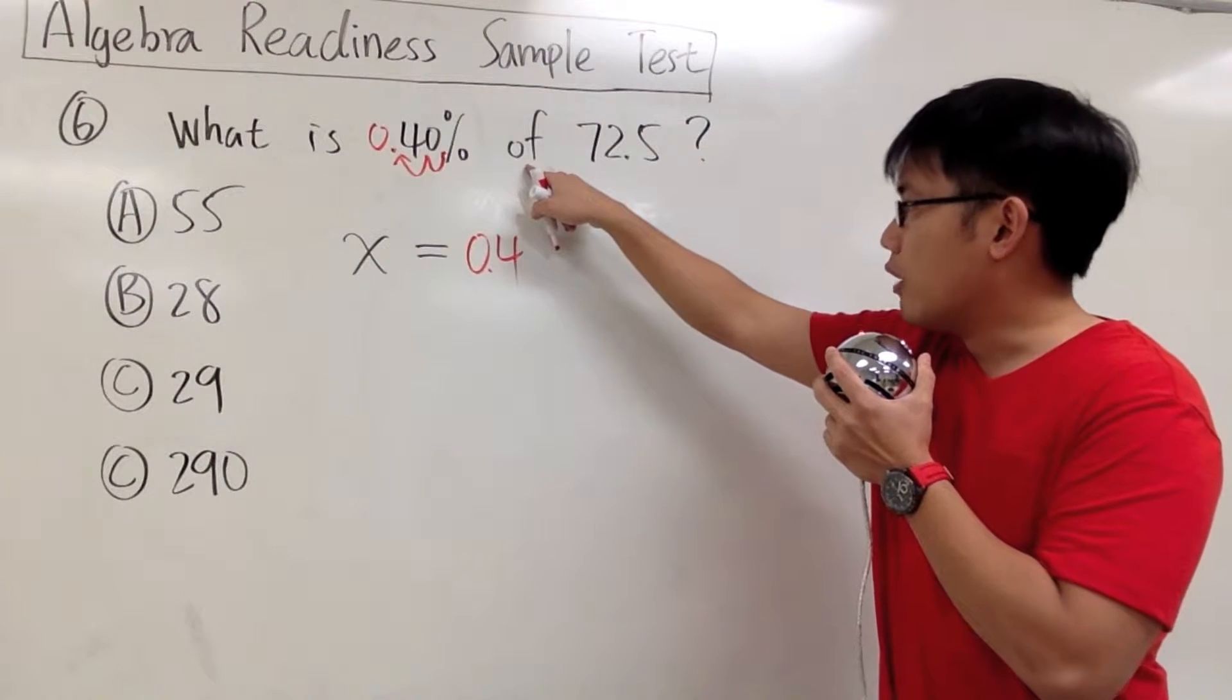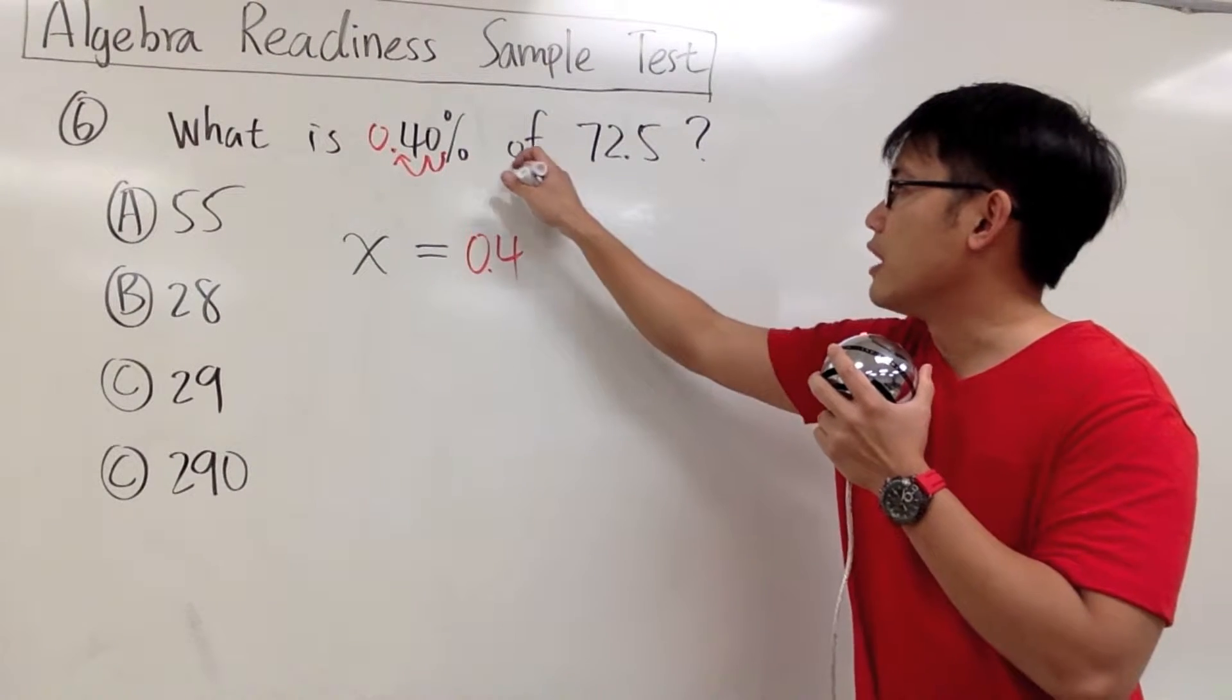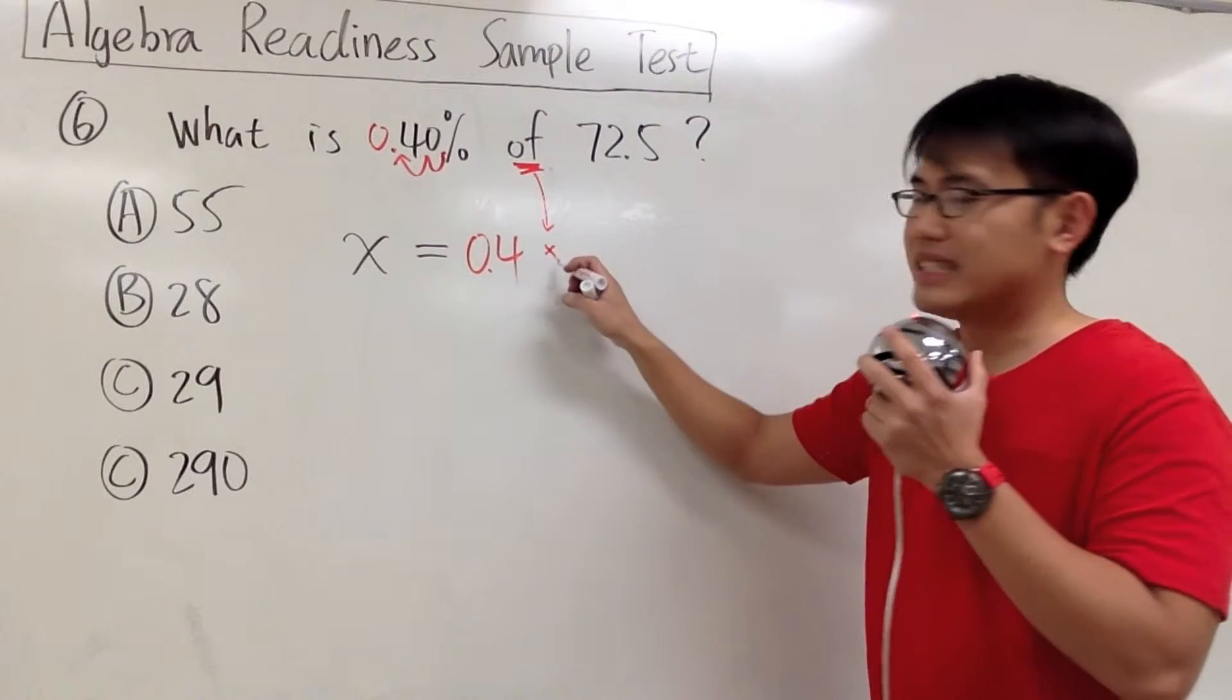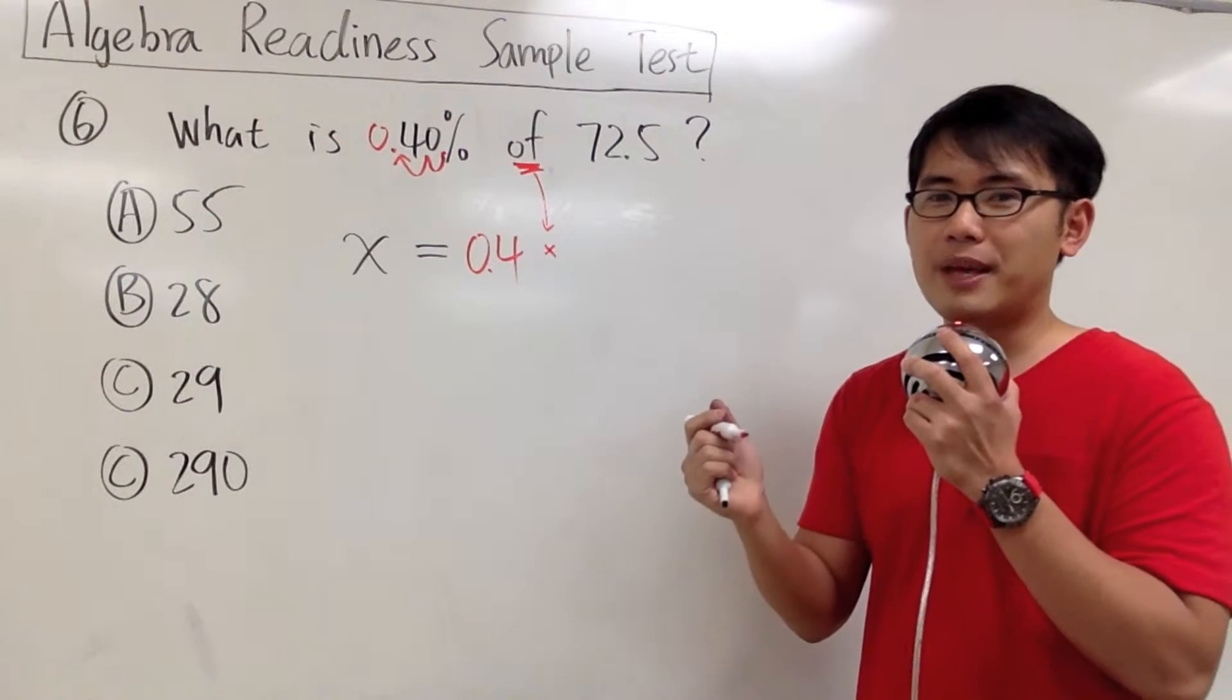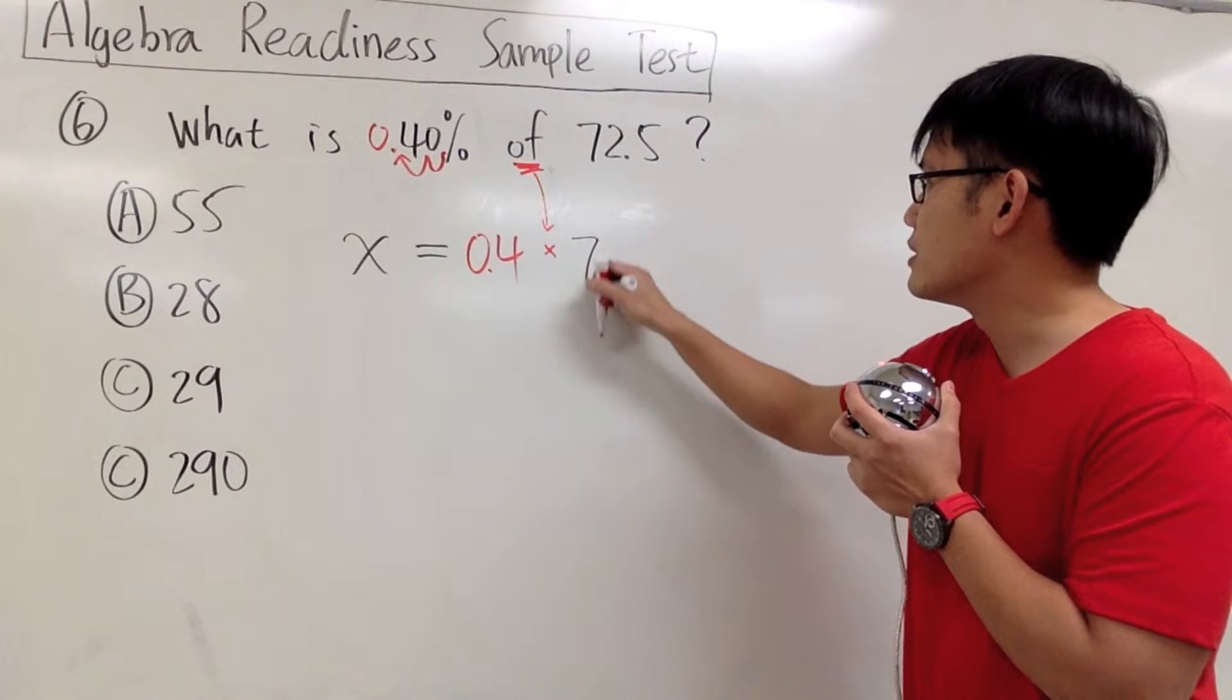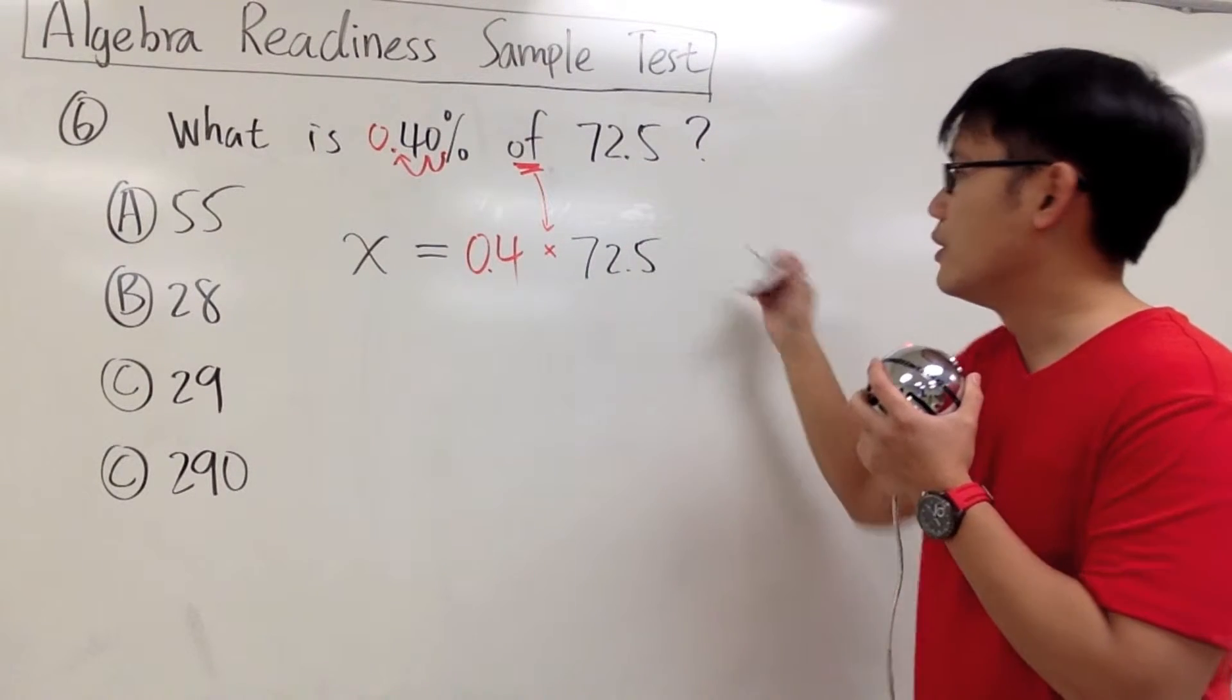And then the word 'of' - whenever you see the word 'of' by itself, this means multiplication. I'm using a small x to stand for multiplication. The 72.5 is just 72.5, no trouble on that.